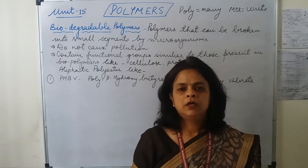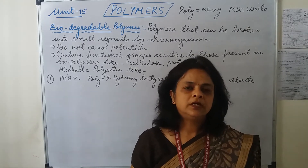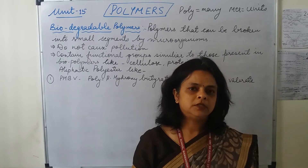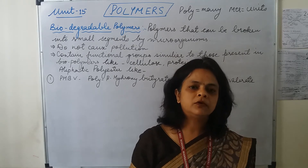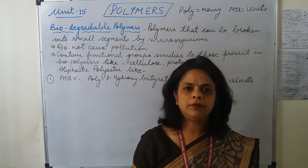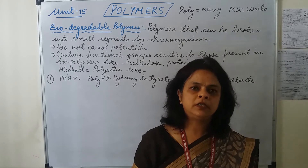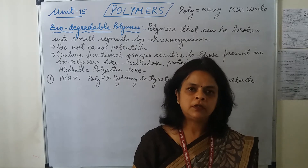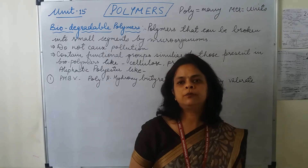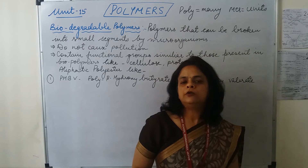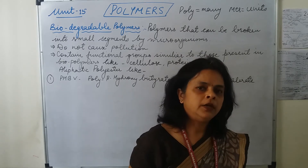Hello students. In the last class we discussed about condensation polymerization and its various examples. The last example was melamine polymer — students, in the notes we had not written the word 'polymer', so write it down. Melamine polymer was formed by the condensation polymerization of melamine and formaldehyde.